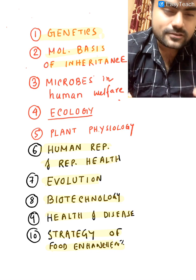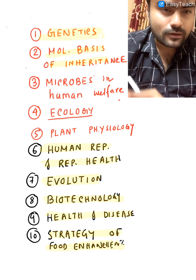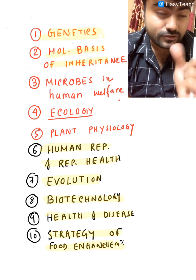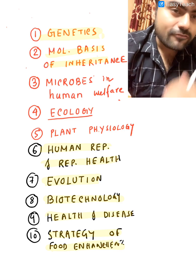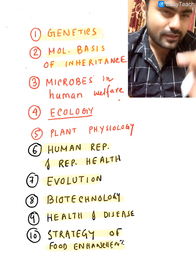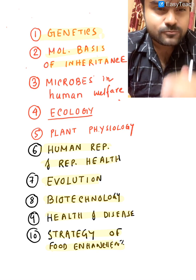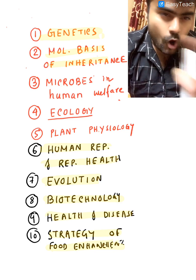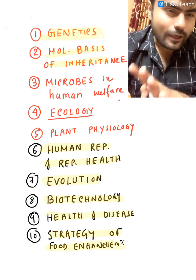Fourth, in ecology — it is a little vast chapter, but 10 to 12 questions come every year from this chapter alone. You have to know about population, biodiversity loss, sewage protocol and treatment. Sewage treatment protocol is very, very important. Then comes plant physiology, which is also important — 8 to 9 questions come every year from plant physiology. I will give you stress on photosynthesis and transport in plants. In photosynthesis, C3 and C4 plants are very, very important. You have to know everything about them, mainly C4.